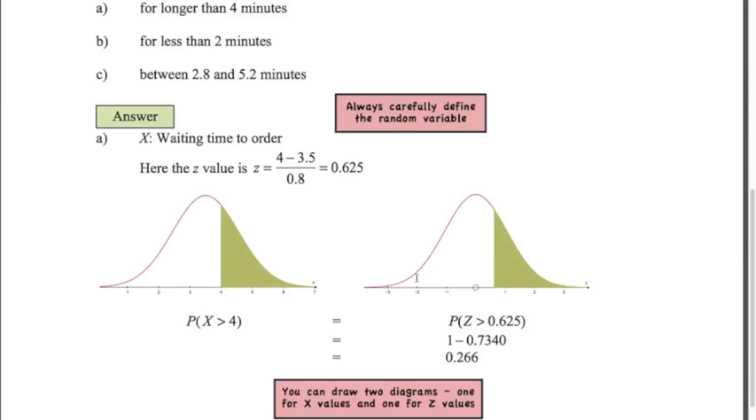So now this problem is converted into the probability that z is greater than 0.625. We know all about z, we've got tables. We look up 0.625 - remember that's going to give us the value from there all the way down. So 1 minus that area is going to give us the shaded area that we want: 0.266.